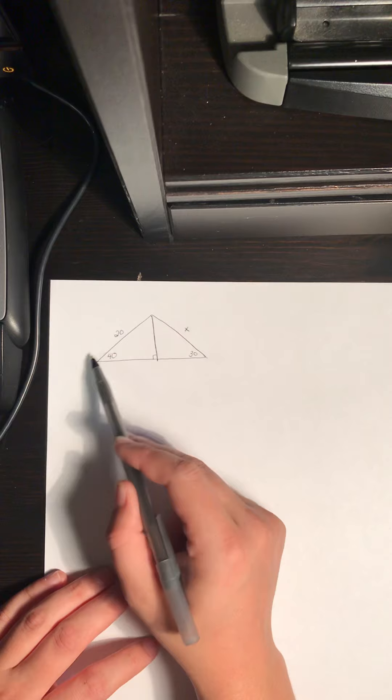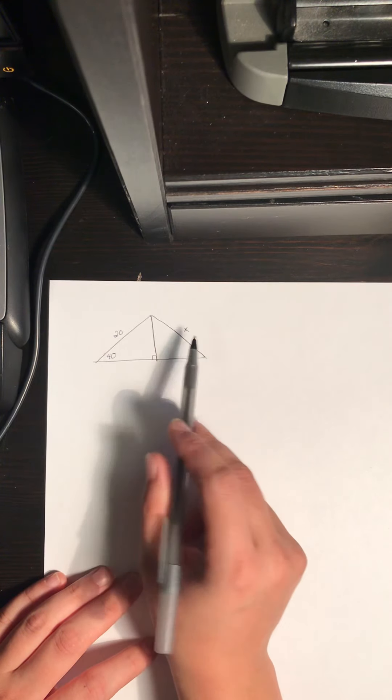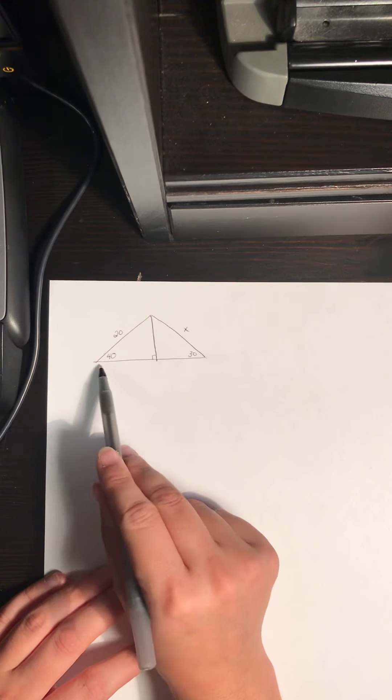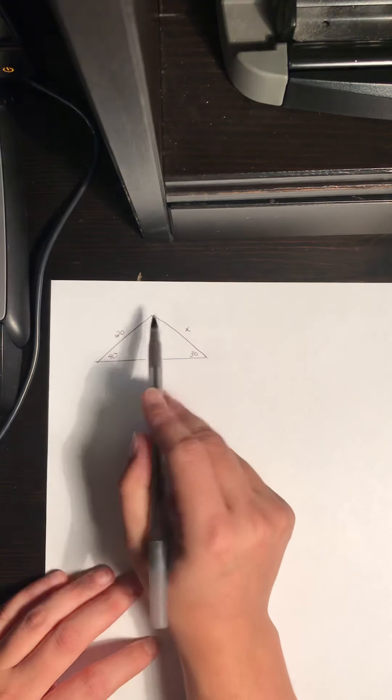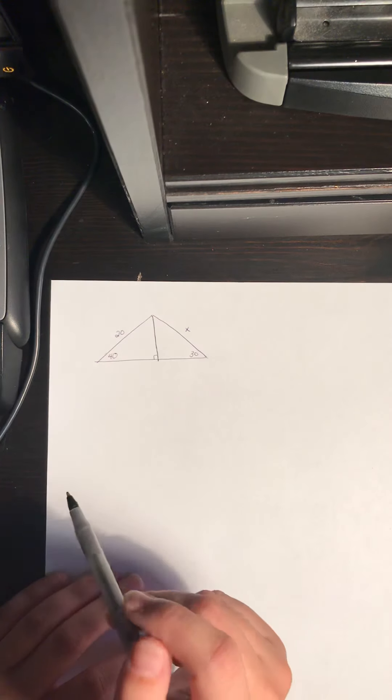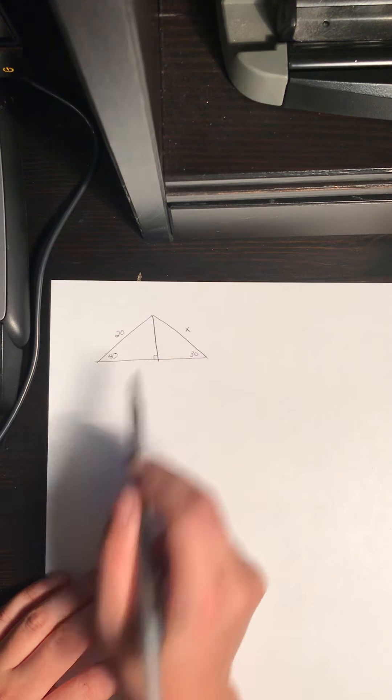So that means we cannot actually solve this whole problem in one step. If I'm looking for X here, I don't have enough information just on this triangle yet and we can't use just this whole triangle here. It has to be right angle triangles. Now even though this kind of looks like it's splitting the triangle perfectly in half, it's not. These two angles are separate so this is not directly in the middle.